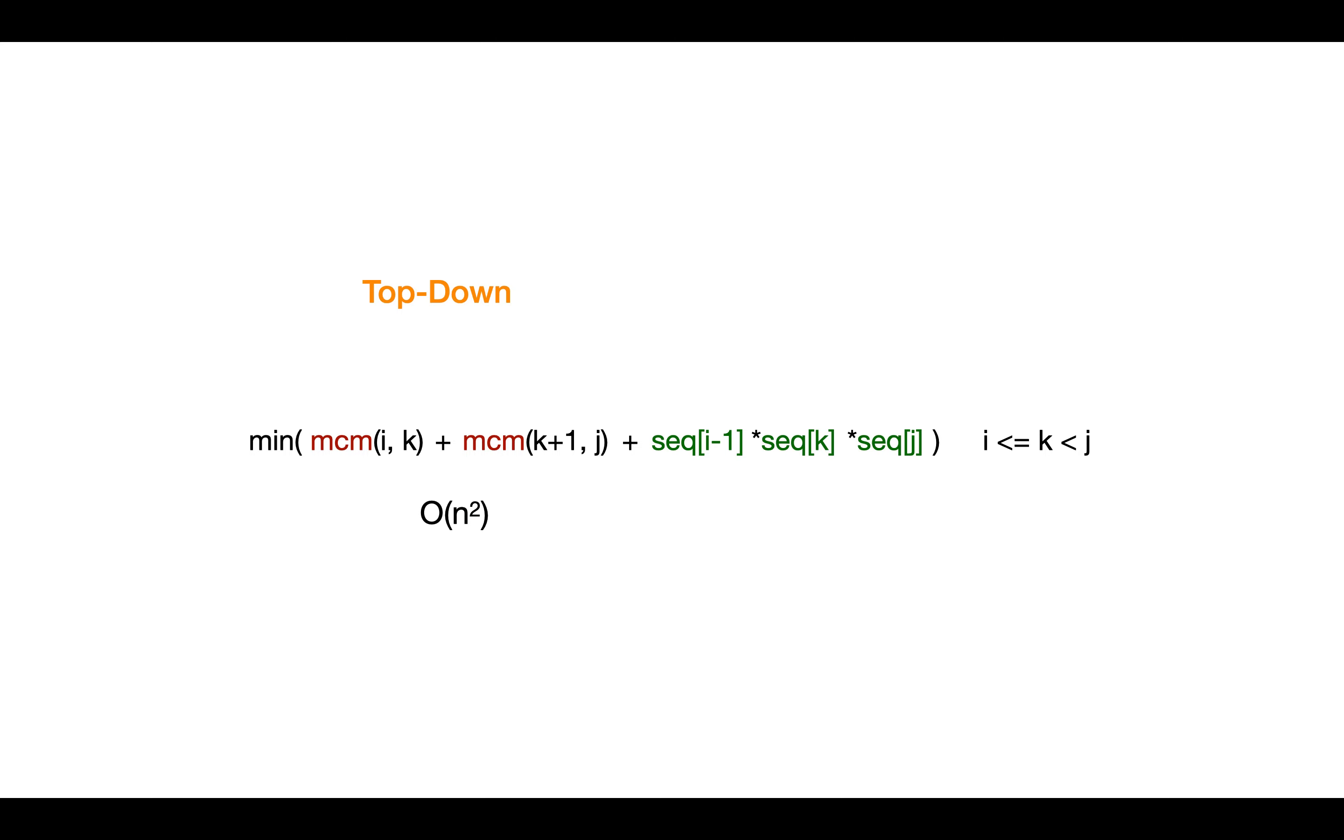Now for each sub-problem there might be n splits possible, right? So we can place the bar at place zero up to n in the worst case. So that makes complexity O(n to the power 3). And space complexity will be O(n squared) as the algorithm is consuming n squared space for storing result for each sub-problem.